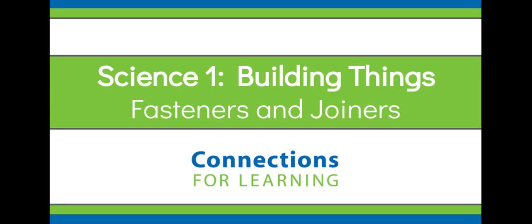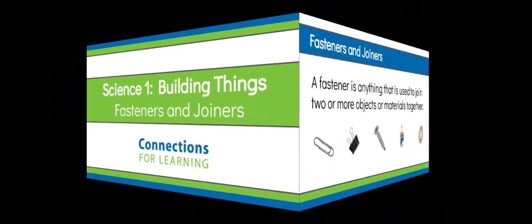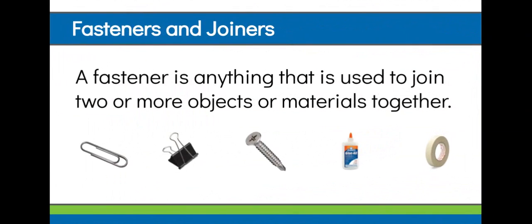Today we're going to look at fasteners and joiners. This is a part of our Grade 1 Science Building Things Unit. A fastener is anything that you use to join two or more objects or materials together.